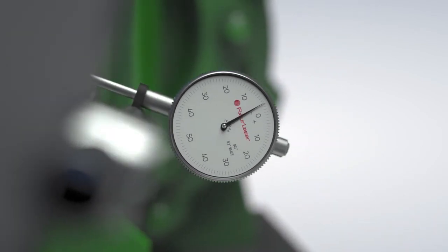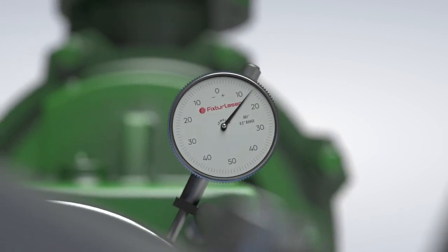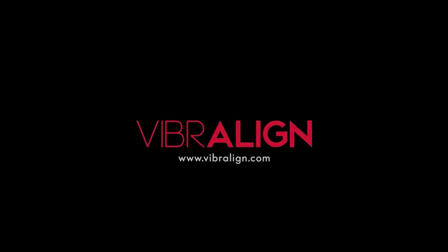As we rotate the shafts back to 12 o'clock, the dial will indicate zero offset at 3 o'clock and plus 20 mils at 12 o'clock, which we know are the correct values. For more information about dial indicator shaft alignments, visit our video library at vibraline.com.